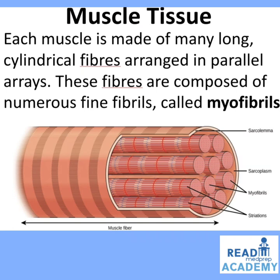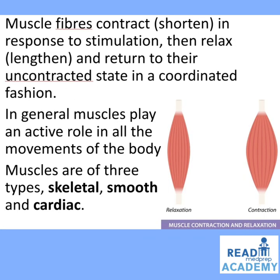Each muscle is made up of many long cylindrical fibers arranged in parallel arrays, composed of numerous fibrils called myofibrils. A muscle fiber has a sarcolemma and a matrix called the sarcoplasm in which the myofibrils are present; these myofibrils have striations. Muscles are of three types: skeletal muscle, smooth muscle, and cardiac muscle. When a muscle relaxes it lengthens and narrows, whereas during contraction it swells and shortens.